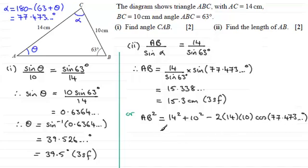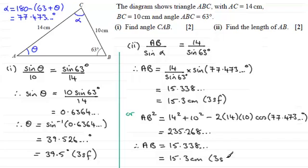If you work that out in your calculator, AB squared comes to 235.268 and so on. To get AB, take the square root of 235.268, and you end up with 15.338 and so on. Rounding to three significant figures gives the same answer as before: 15.3 centimeters.